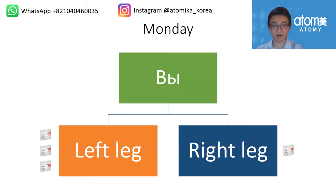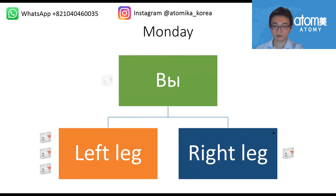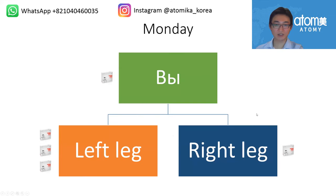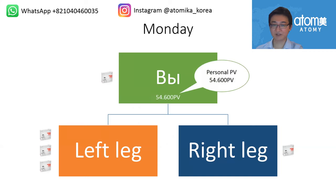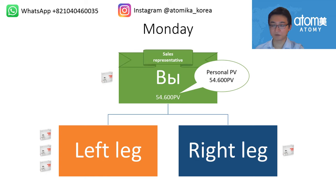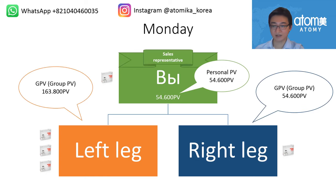Let's say it's Monday and three people on your left bought three HemoHIMs, and one person bought one HemoHIM on your right leg, and you yourself bought one HemoHIM. Your personal PV equals 54,600 PV — more than 10,000 — so you are a sales representative. From this point on, you can start earning money with the company.